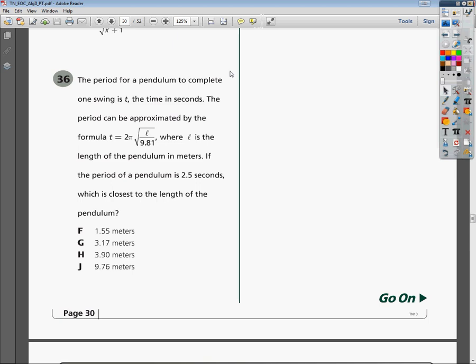Alright, this is the Algebra 2 End of Course Practice Test Number 1, Question Number 36. The question says the period for a pendulum to complete one swing is t, the time in seconds. The period can be approximated by the formula t equals 2π times the square root of the length of the pendulum divided by 9.81 in meters. If the period of a pendulum is 2.5 seconds, what is the closest to the length of the pendulum?